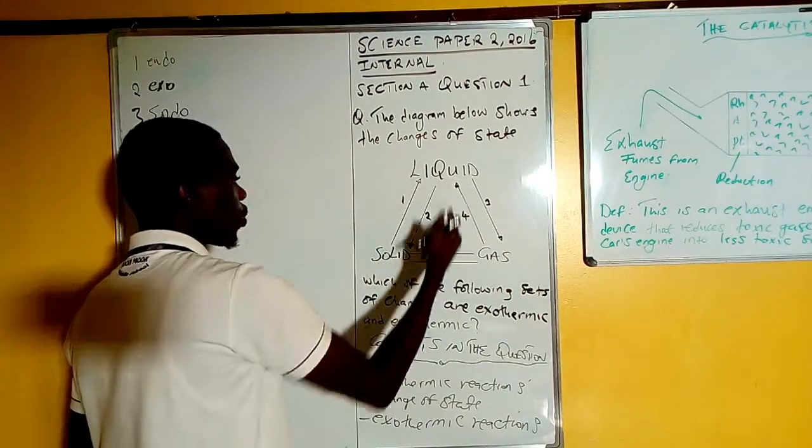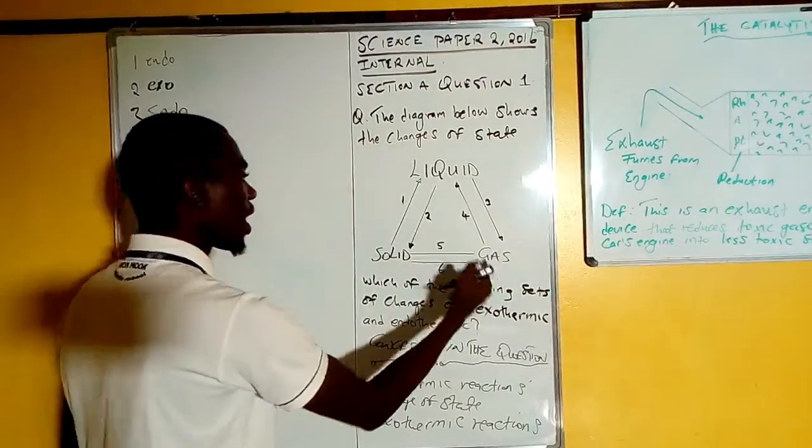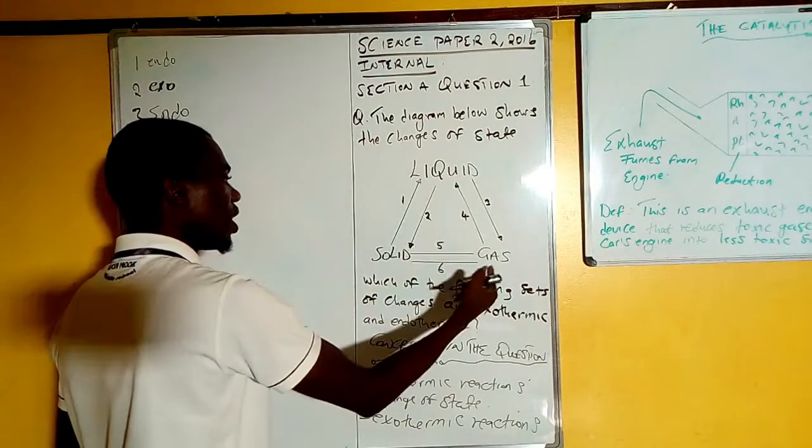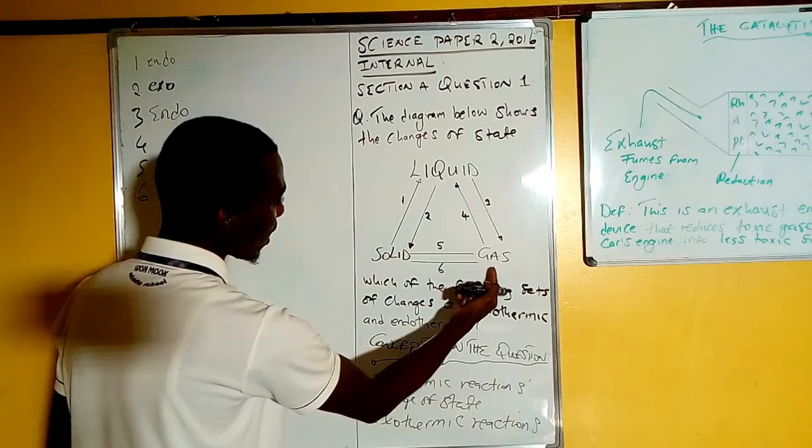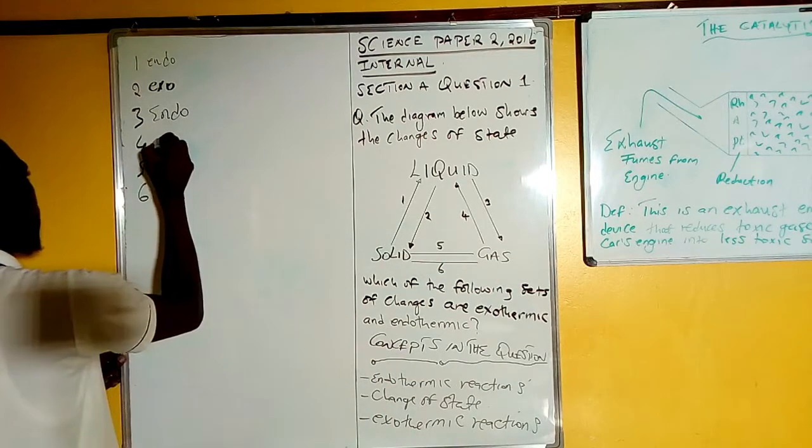Then the fourth one now is from gas to a liquid, condensing. A gas condensing back to a liquid. So condensation, you are removing heat. So the gas here is the one that is losing heat. So number four is actually an exothermic reaction.